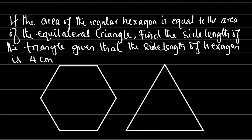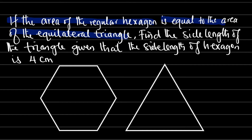Hello, good morning viewers. Let us find a solution to this interesting question. It says that if the area of the regular hexagon is equal to the area of the equilateral triangle, we are asked to find the side length of the triangle, given that the side length of the hexagon is 4 cm.